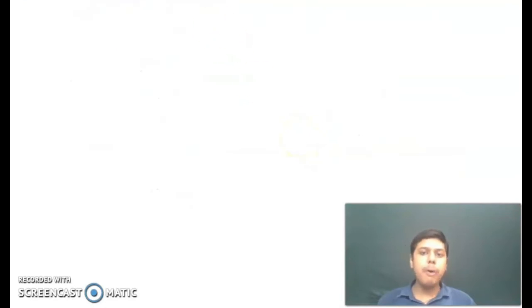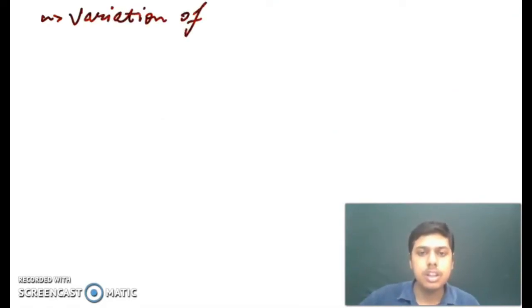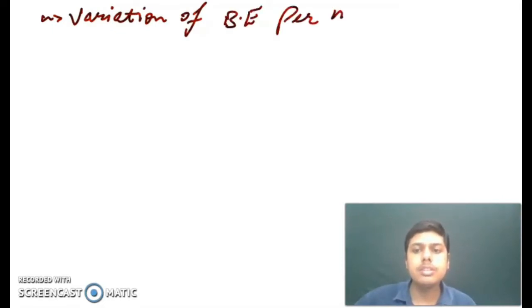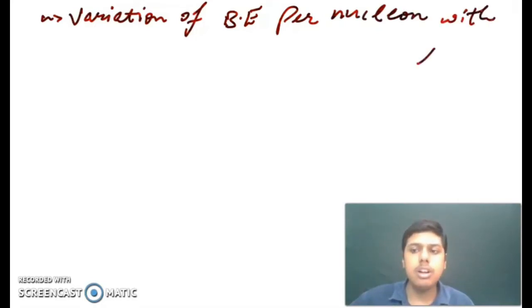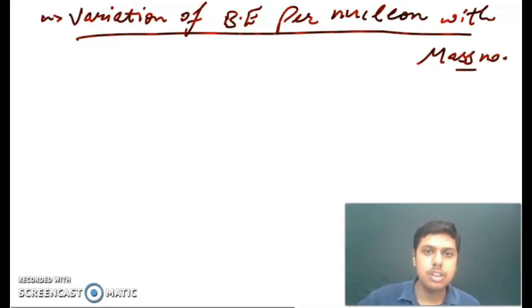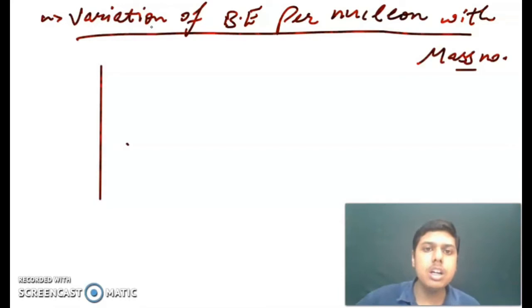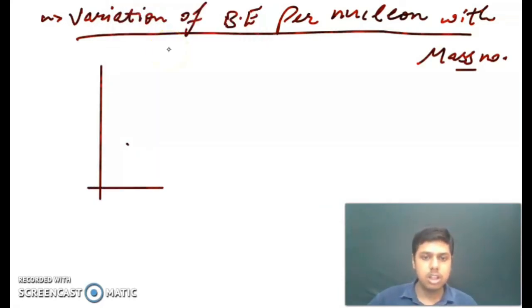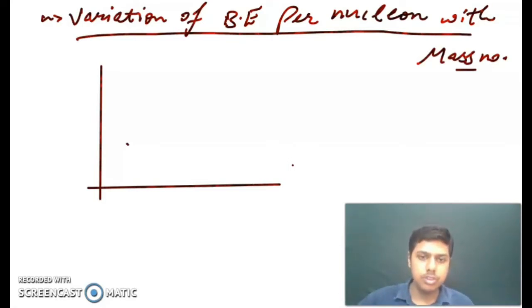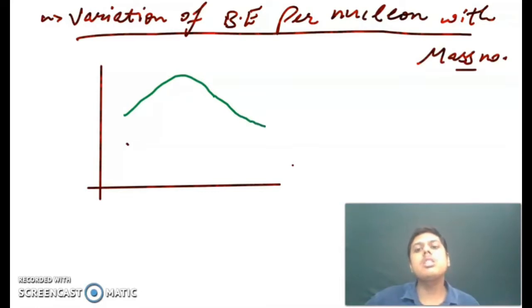Now we have a very important topic: the variation of binding energy per nucleon with mass number. I am going to make a graph here. The variation will be somewhat like this — first it will rise, then it will reach its peak and will further settle down.